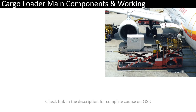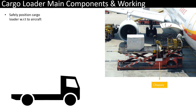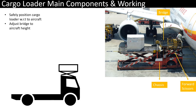Although the cargo loader looks like a very complex and big machine, its major components are simple to understand. The whole system is built over a truck chassis which can be driven to the desired aircraft stand by a driver. It has a bridge mounted over a forward scissor that constitutes its lifting mechanism, and the height of the bridge is adjusted to match the height of the aircraft door. An operator panel is also located over this bridge, which controls the elevation movements of the cargo loader.